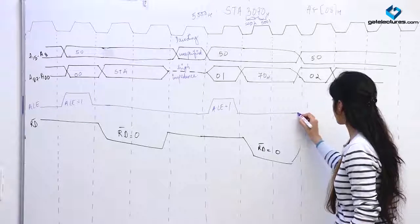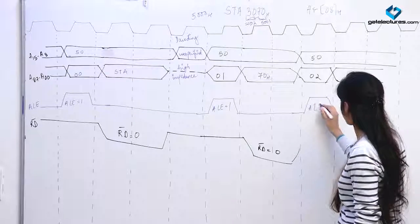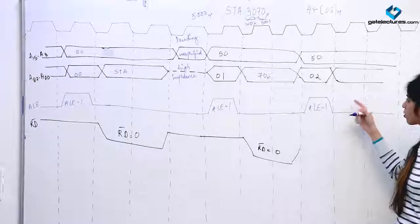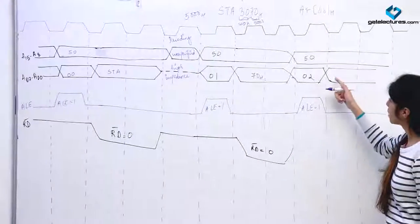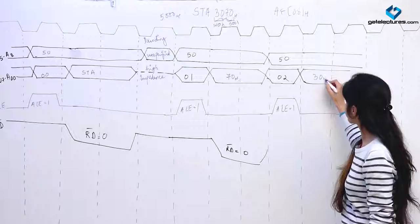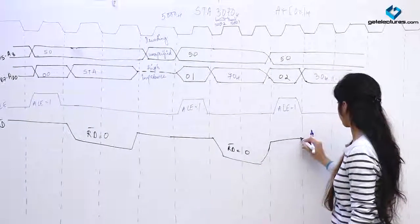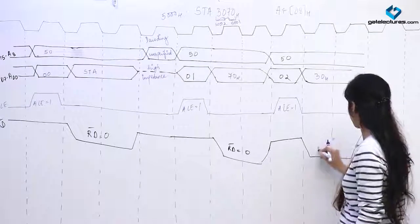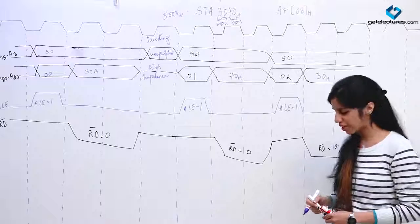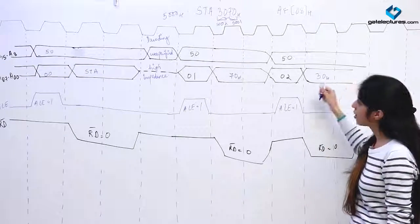For this we are going to make ALE 1 of course, so this acts as an address bus. Again when ALE is low this address is going to be read. When you read this address you are going to get 30. We are going to make read-bar 0, since the read line is an active-low signal.